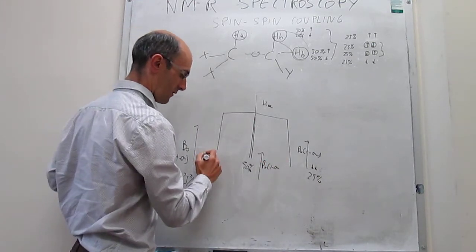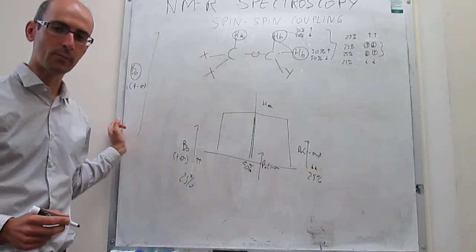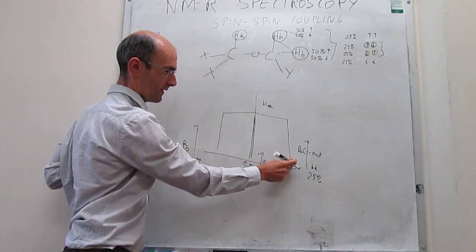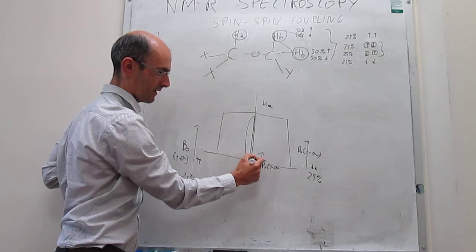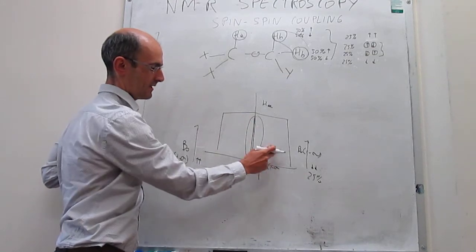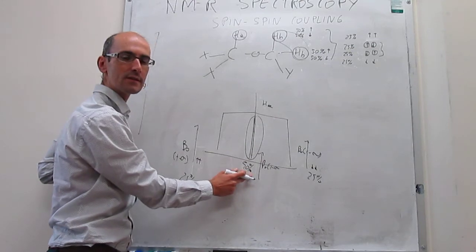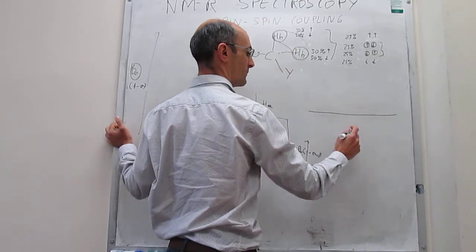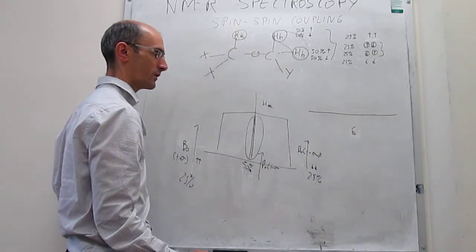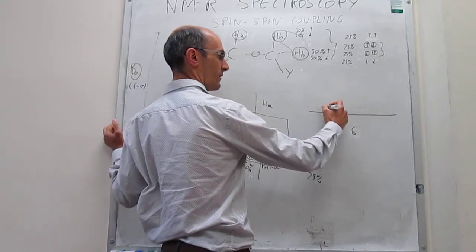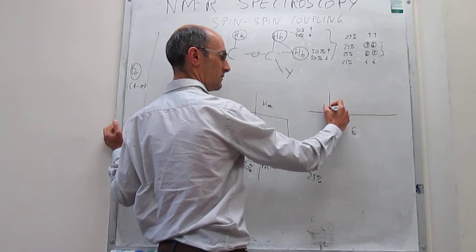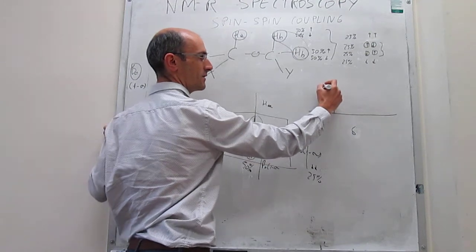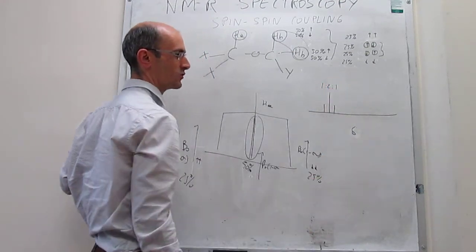What appears in the spectrum is what we call a triplet — the signal is split into three peaks. This central peak is going to be twice as intense as the outer ones, because it occurs 50% of the time. The splitting pattern for H_A is 1:2:1 — those are the relative intensities.